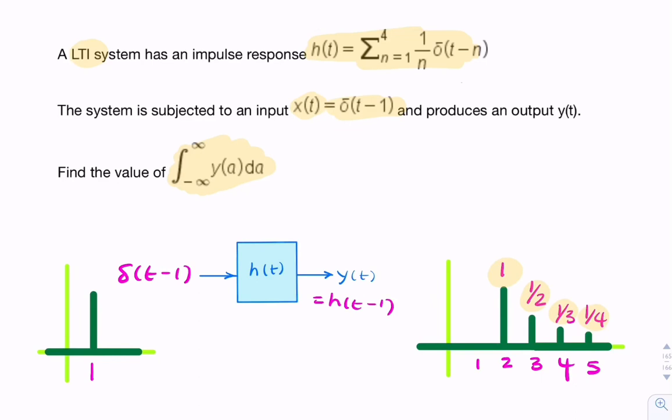Remember, each Dirac function has an area determined by its weighting coefficient. We simply add up these areas to get the total area. I can calculate this as 1 plus 1/2 plus 1/3 plus 1/4, which gives me 25/12, or 2.083. That's the final answer.